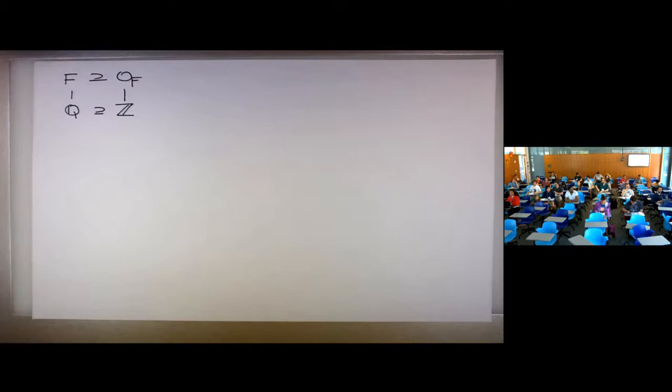This is the third lecture of algebraic number theory. Today we're going to talk about something called the ideal class group, and really talk about the failure of unique factorization in the ring of integers OF. Let's briefly recall what we talked about last time.